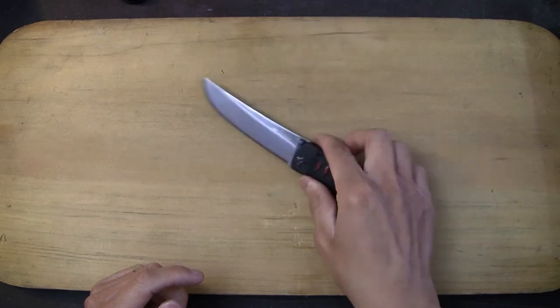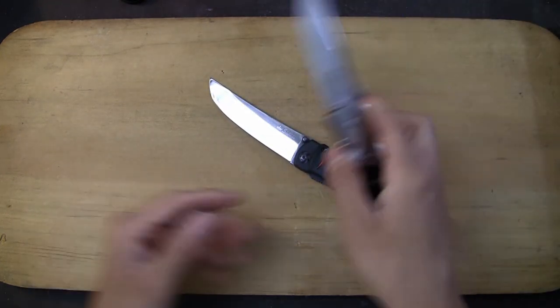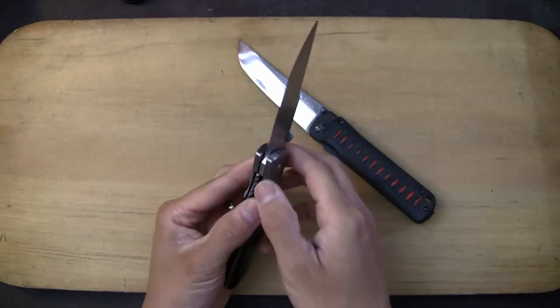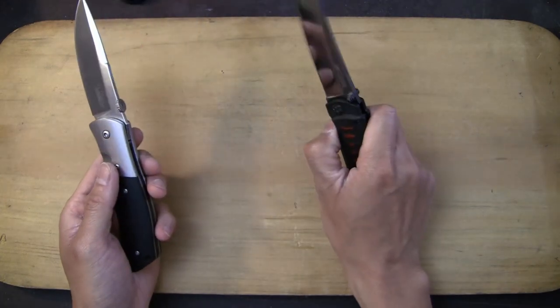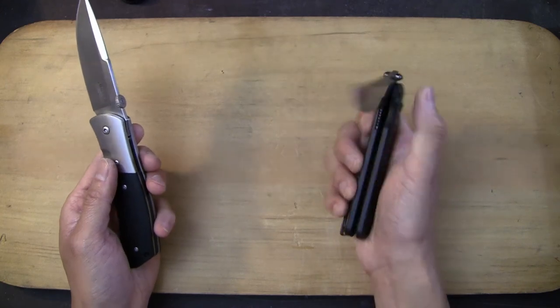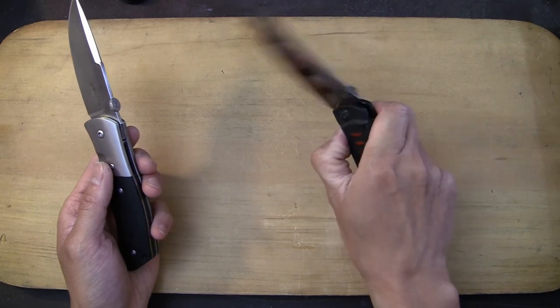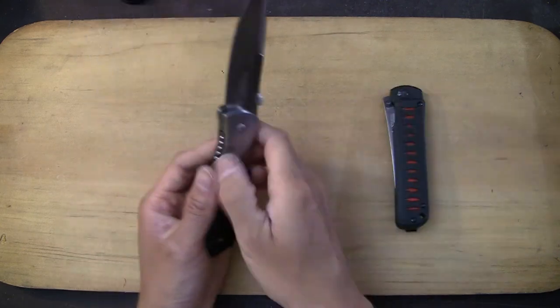And again, that takes me back to the point of I don't understand why Boker decided to use ball bearing pivots on a knife of this caliber when you can have phosphor bronze washers that just does exactly the same thing. Very quick to deploy, very smooth. I mean, this blade just drops like that. Look at that. Very nice. And this thing does the same thing.